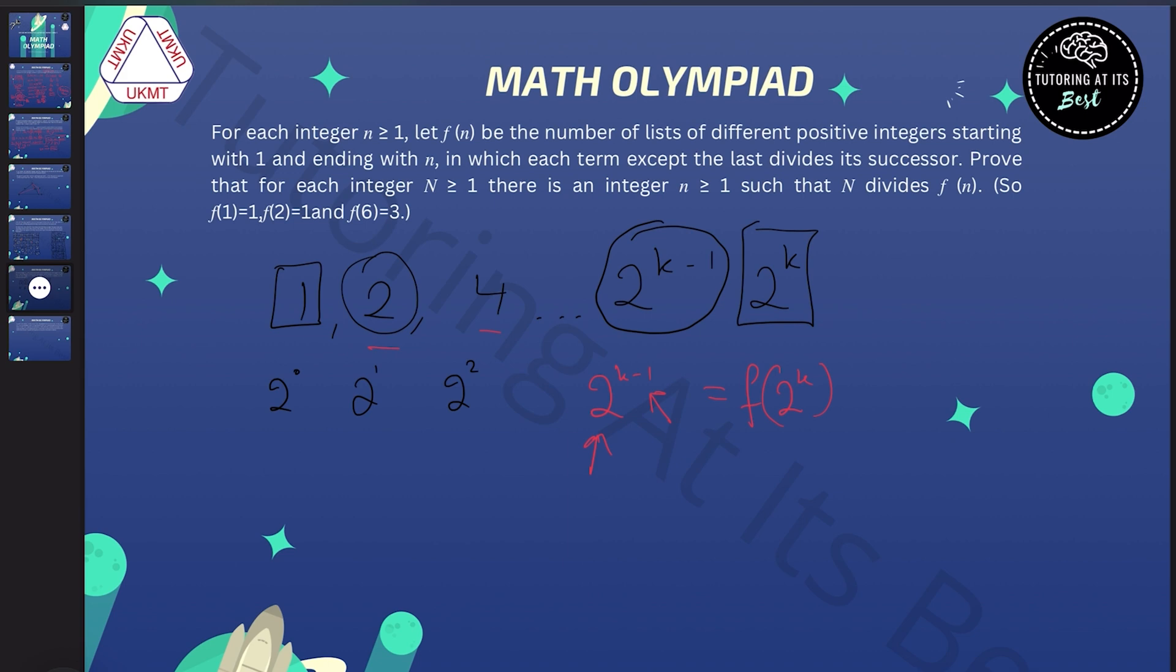Unfortunately, this alone is not going to solve the problem. So we're asked to find a number that was a multiple of n for any n. And unfortunately, if we find that f(2 to the k) is equal to 2 to the k minus one, that means that this will be a factor, which again is quite limited. So let's think about another number.